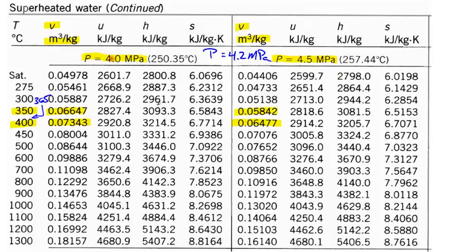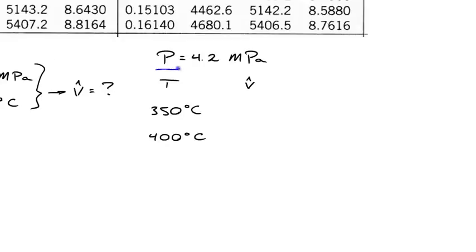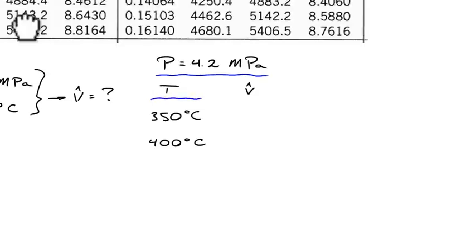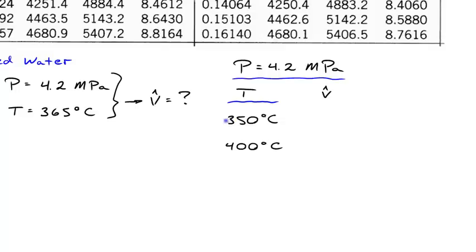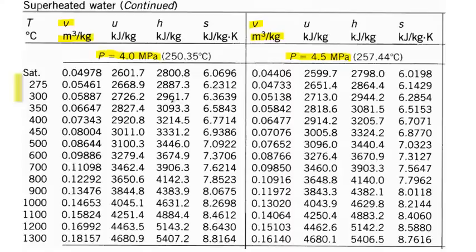So we're going to make our own table at a pressure of 4.2 megapascal. We'll interpolate at 350 degrees C between the values at 4.0 and 4.5 megapascal, and at 400 degrees C between those specific volumes. That gives us a third table at 4.2 megapascal with temperatures of 350 and 400 bracketing our target of 365 degrees C — filling in the specific volumes at both temperatures evaluated at 4.2 megapascal.